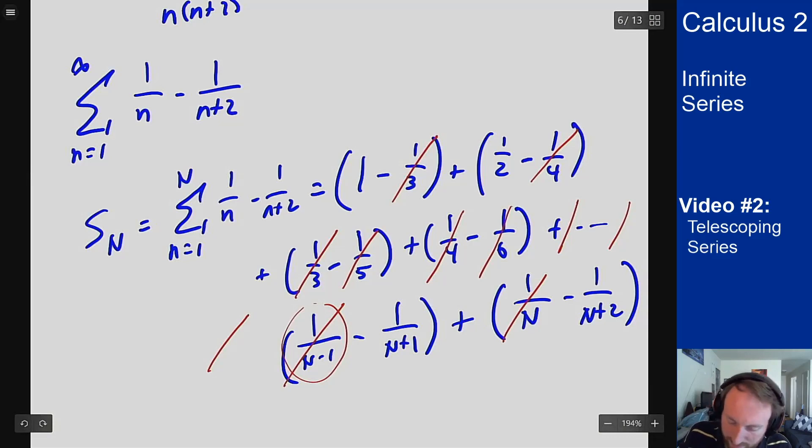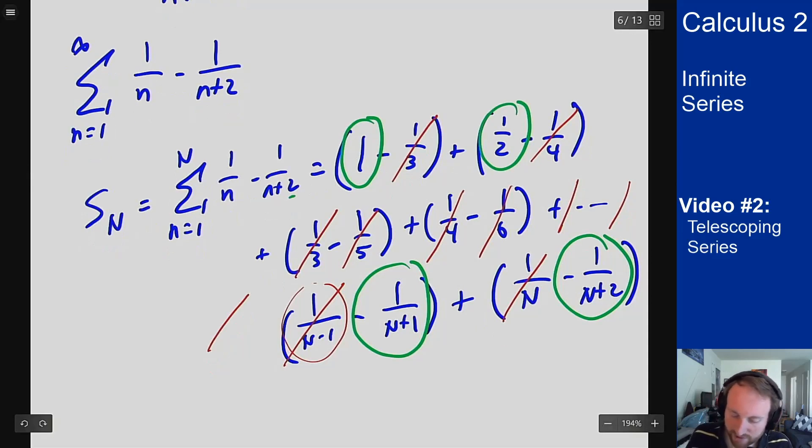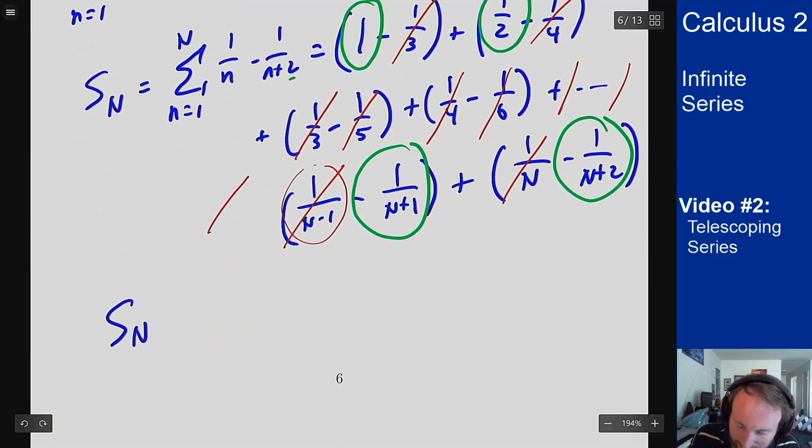So what is left over is this one, this one-half, this N plus one, and this N plus two. When you see the pattern for these, you'll see it. The point is because I have a plus two here, I'll get two terms on the front and two terms at the back. So this expression here tells me that S_N is one plus a half minus one over N plus one minus one over N plus two.